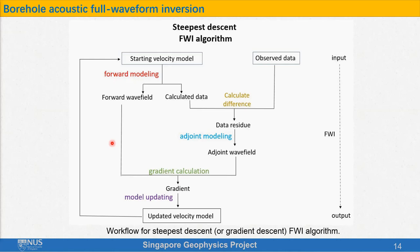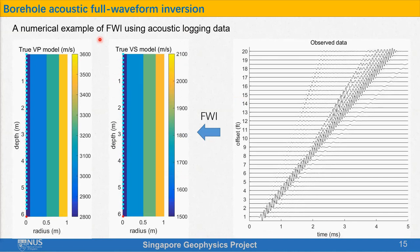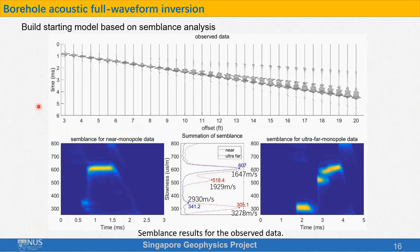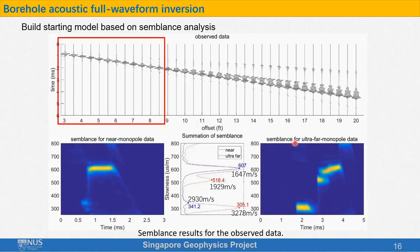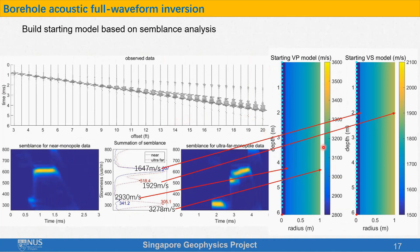In this research, my contribution is to revise the algorithm from conventional Cartesian coordinates to cylindrical coordinates to better fit the borehole environment. Because of the limitation of time, I cannot go through the details. I am working on a journal paper with the same topic as this presentation. You can check the paper for the details if you are interested. I will give some examples to show the applicability of FWI using acoustic logging data. This is an example of a formation with three layers. Assume we do not know the velocity models and we would like to invert them from the observed data.